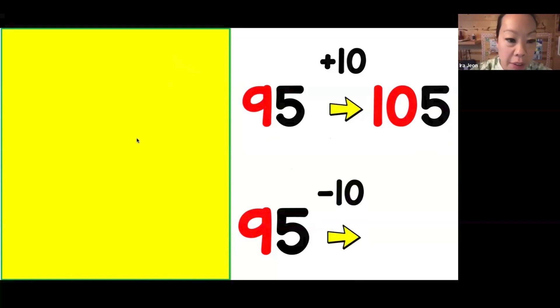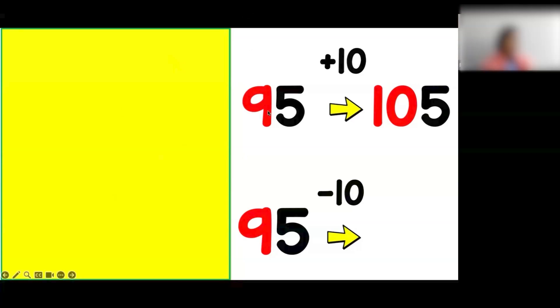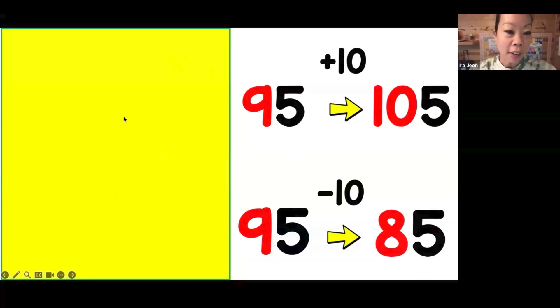My last number would be 10 less. What would that number be? Ronika, what is the number? 85. Correct. Okay everyone.